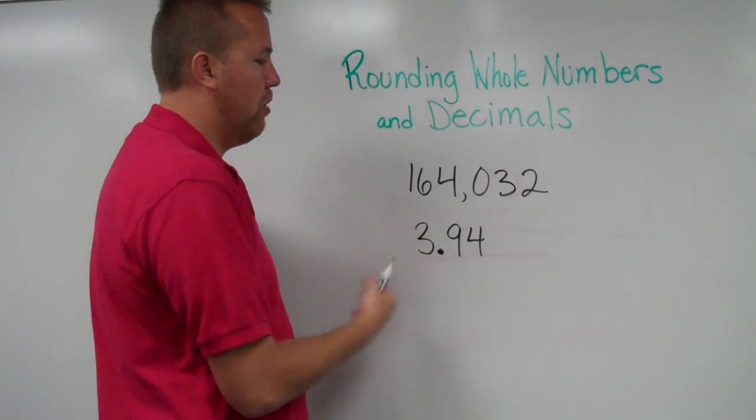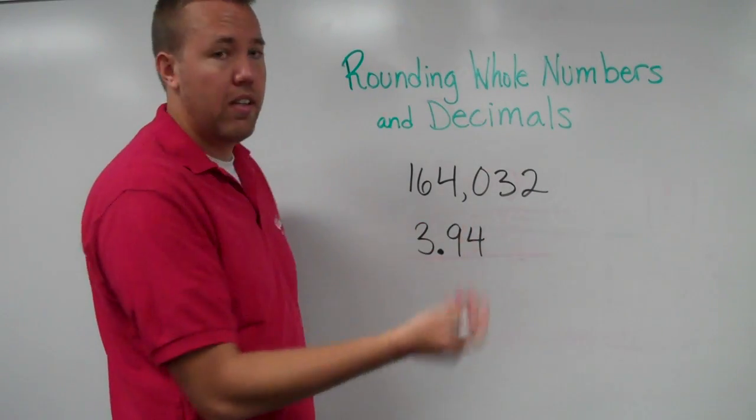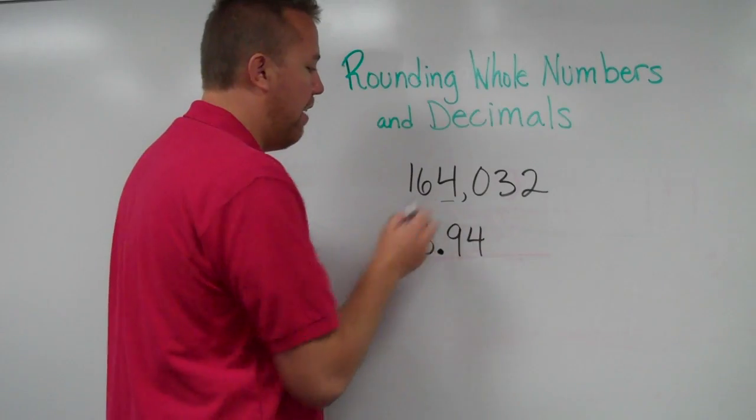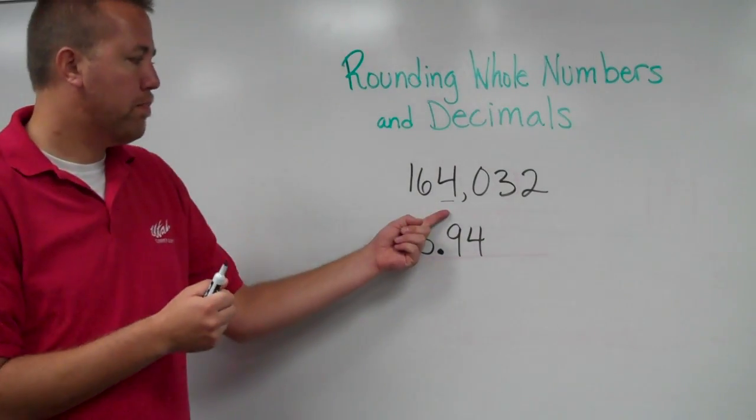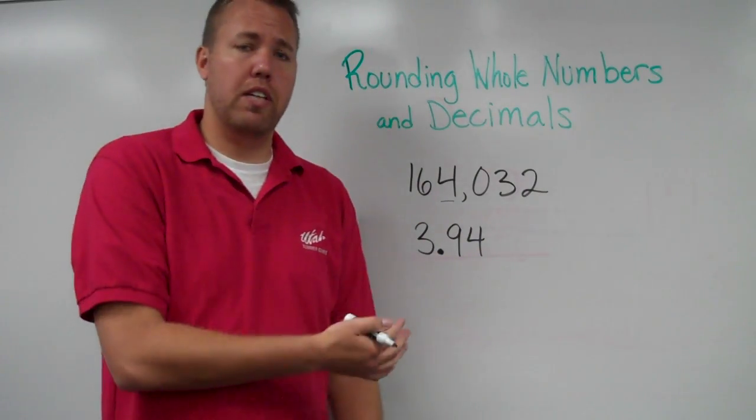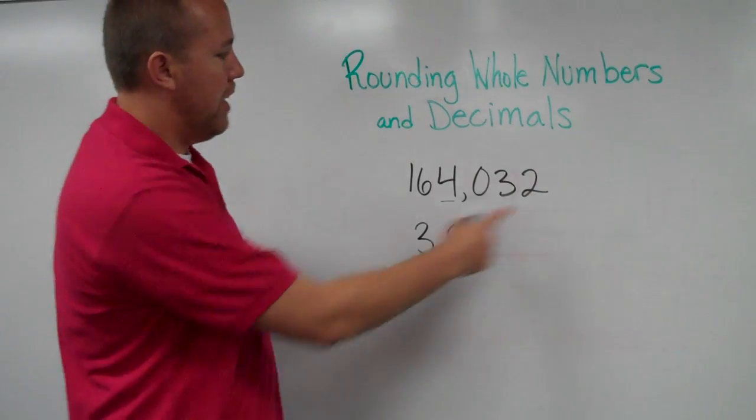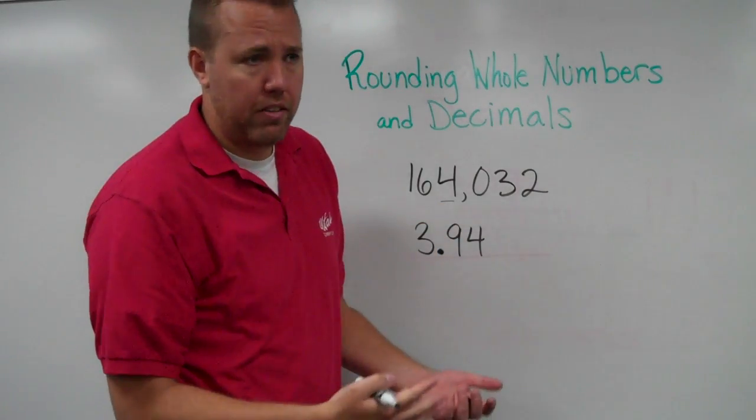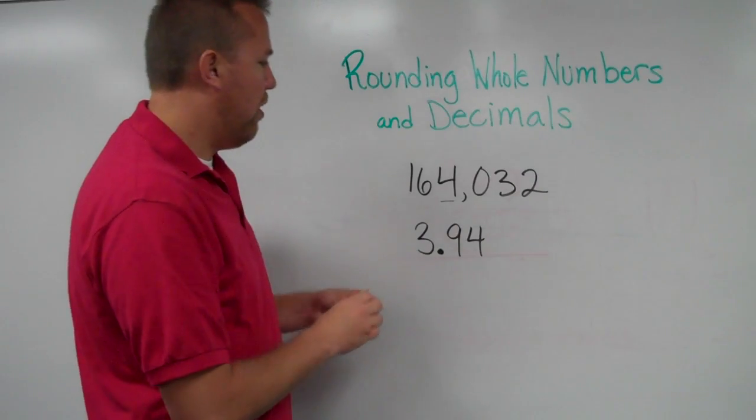Okay, so the first one. I have this whole number, 164,032. It may have that underlined right there and say please round to the underlined digit. Or, because that's in the thousands place, it may also ask please round to the nearest thousand.